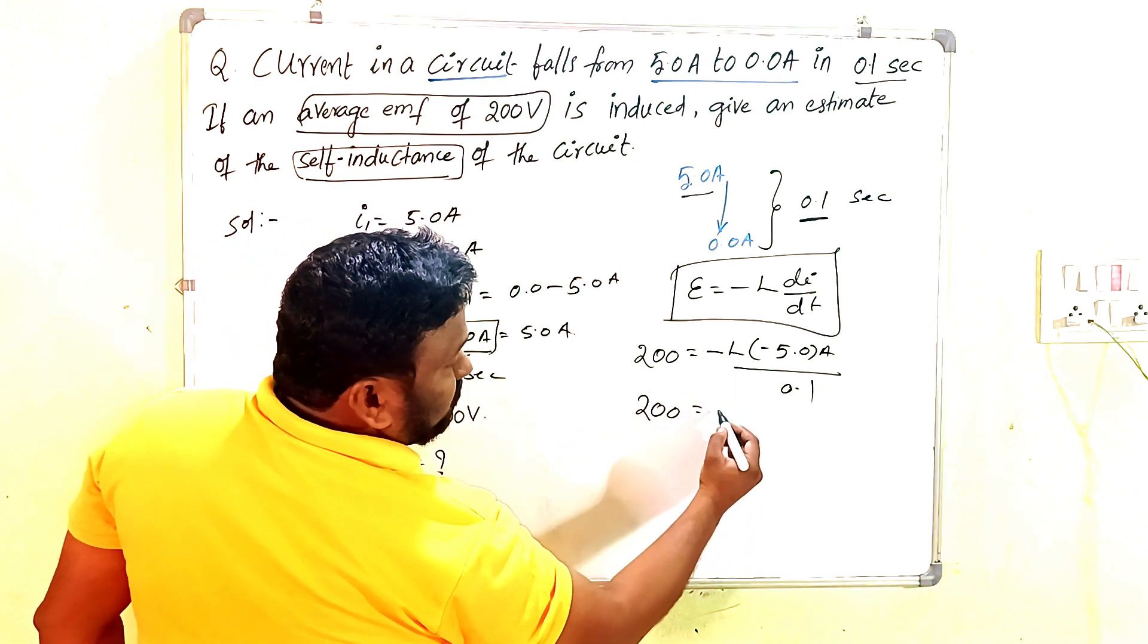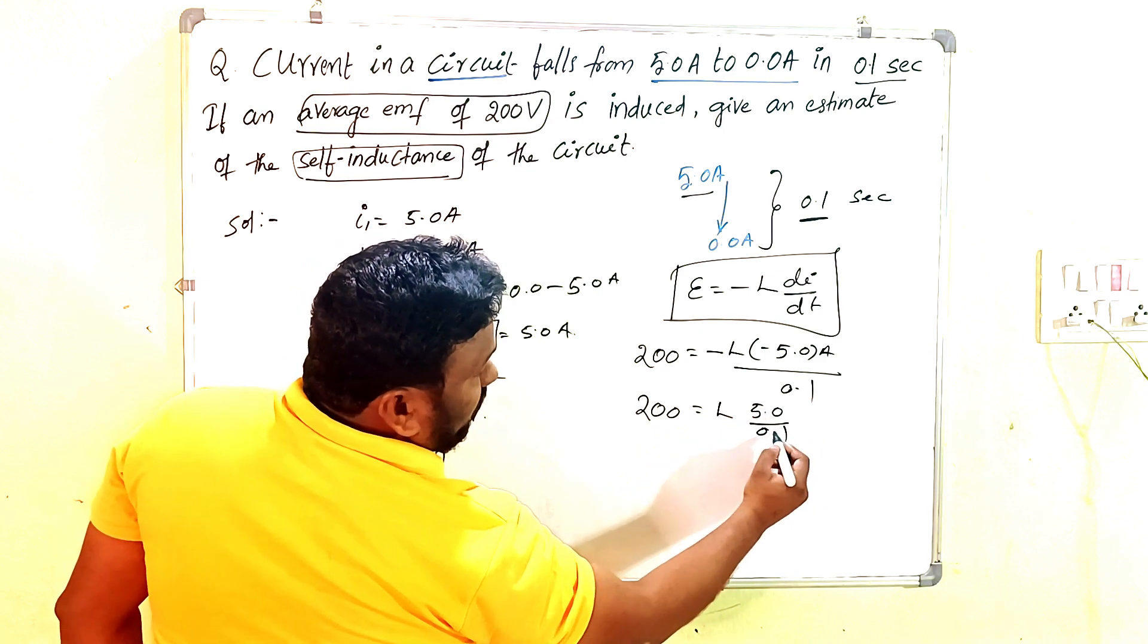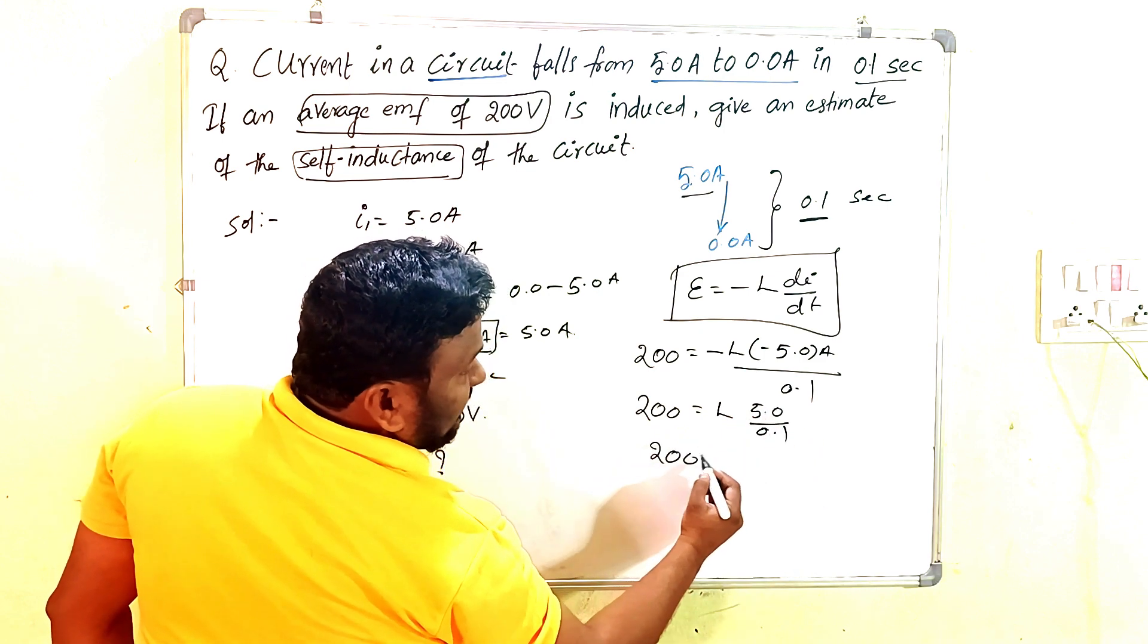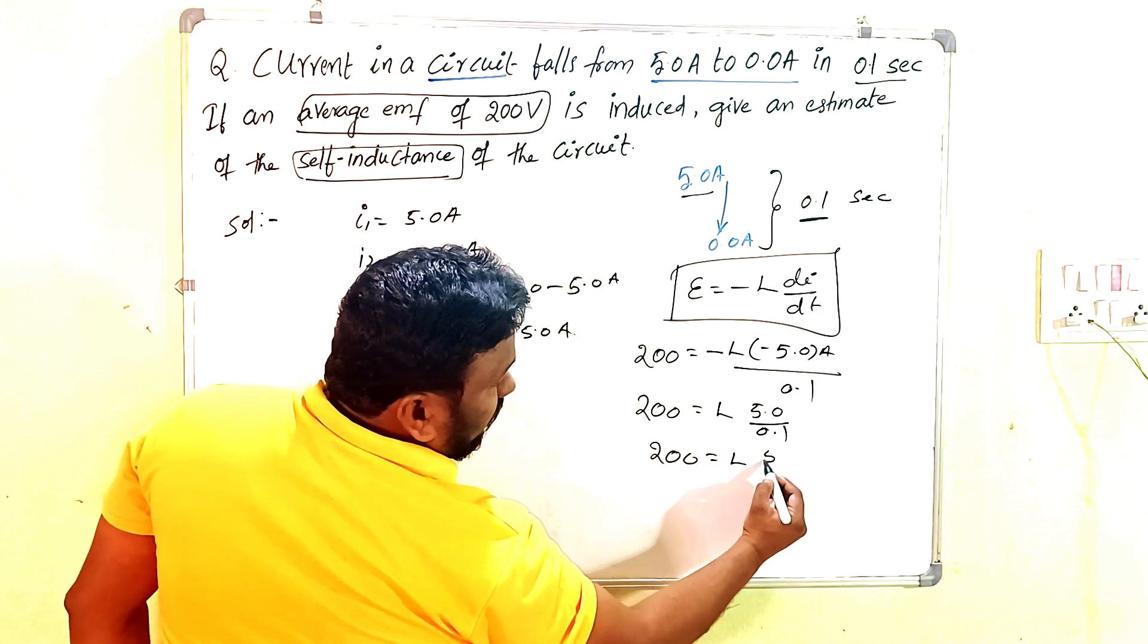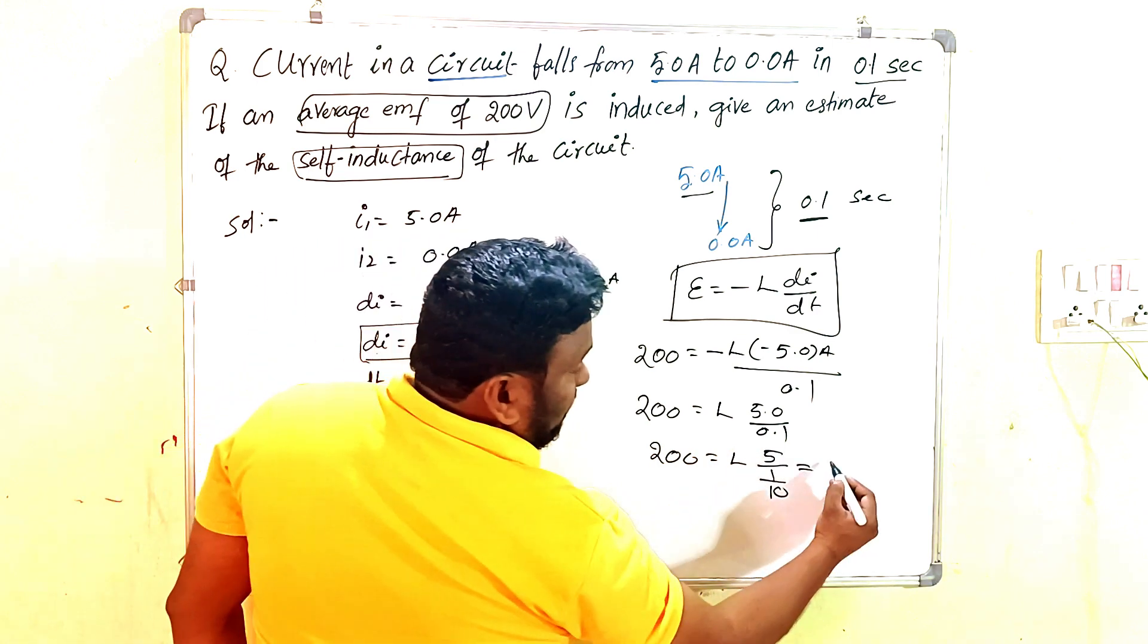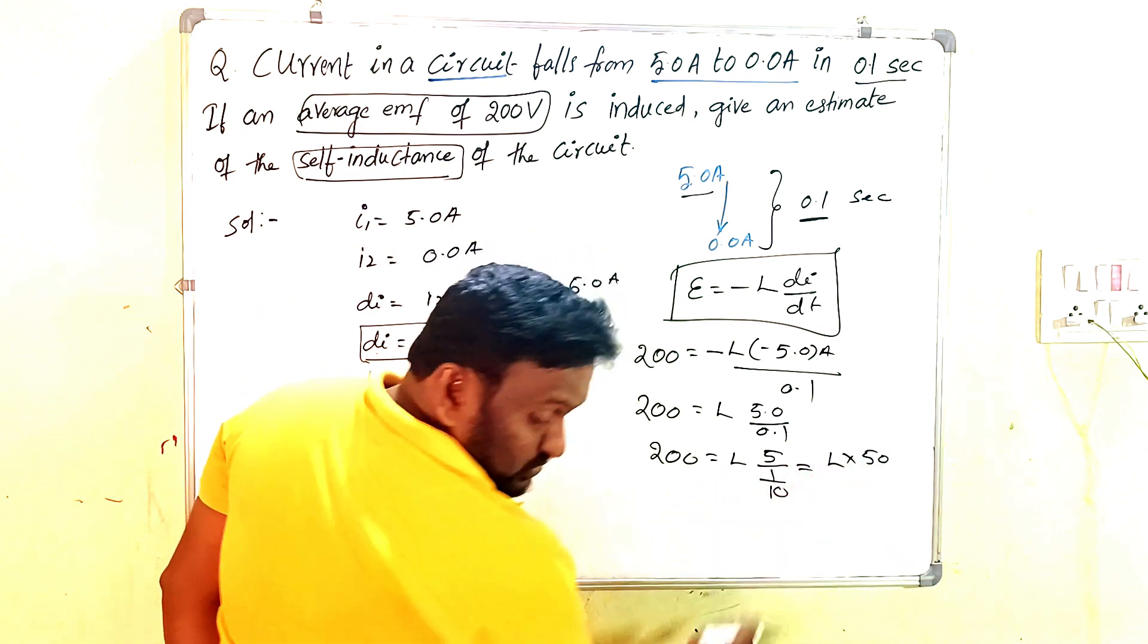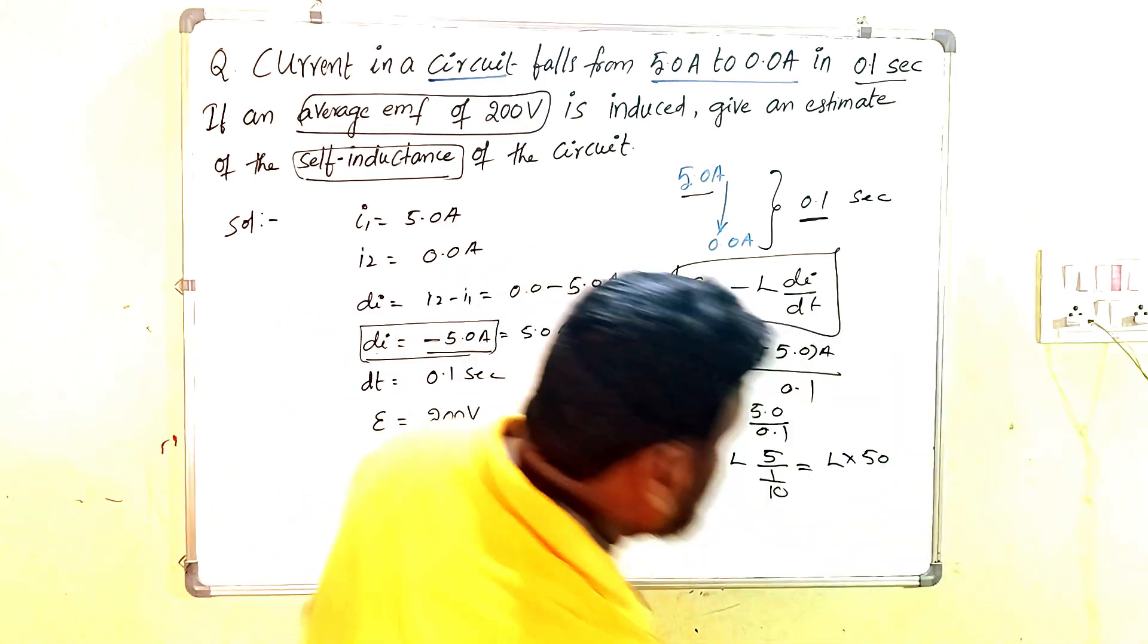That means 200 = L × (5 / 0.1). We can write this as L × 50, since 5 divided by 0.1 equals 5 times 10, which equals 50.